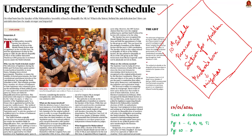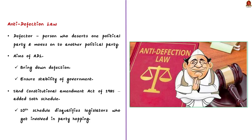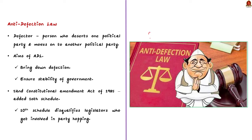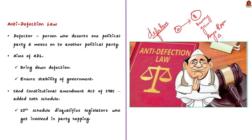What is anti-defection law? To have a better understanding, first you have to understand who is a defector. A defector is a person who deserts one political party and moves to another political party for any political gain or money. This attitude is called the Aya Ram, Gaya Ram culture of Indian politics. In a parliamentary democracy like India, when legislators are frequently defecting, the stability of the government is affected. To prevent this practice, the anti-defection laws were brought in.